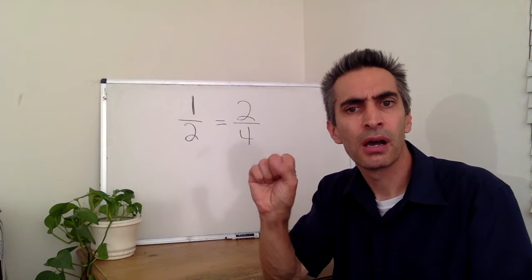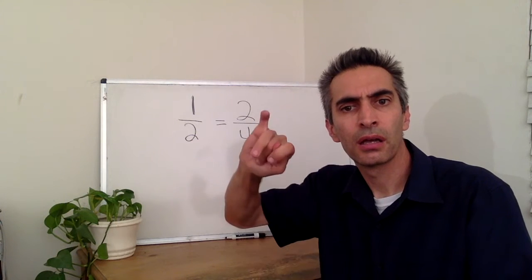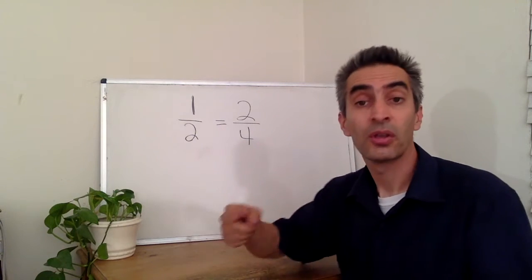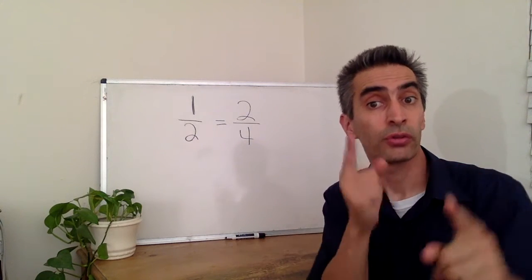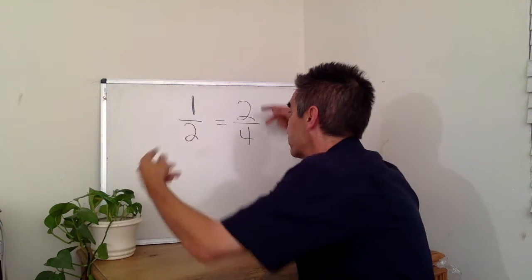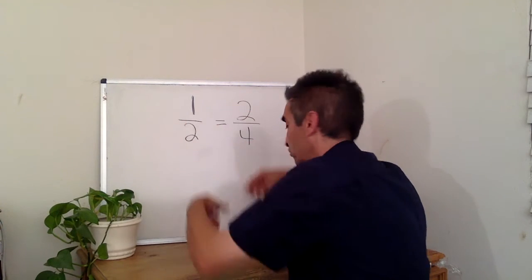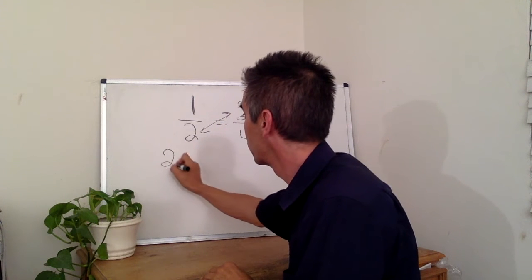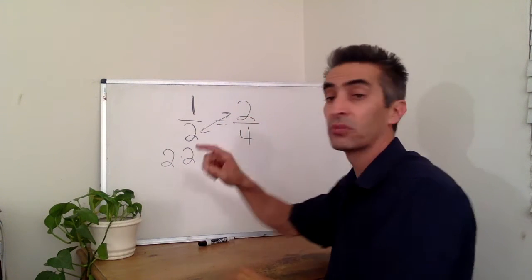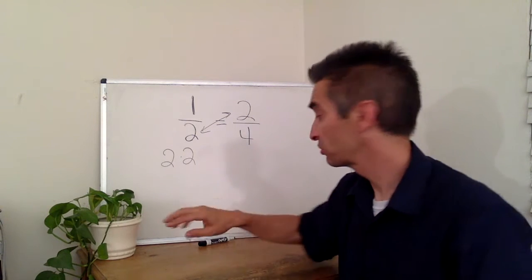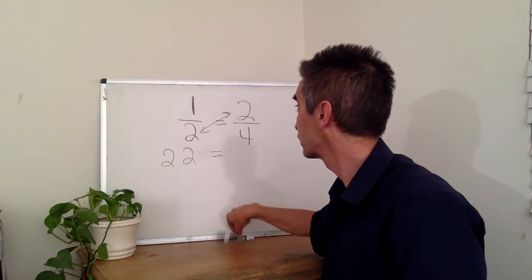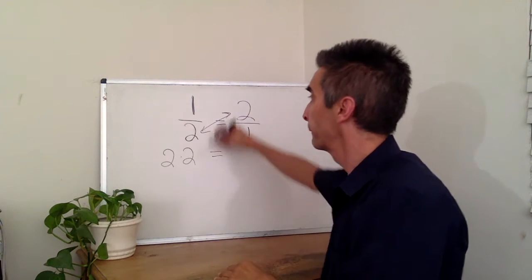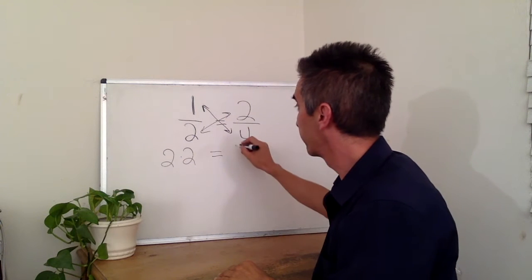What does that mean? Cross-multiply. I'm going to show you. We have one-half equals two-fourths. We cross-multiply the two and the two — two times two. And then we cross-multiply the four and the one. We have one times four.